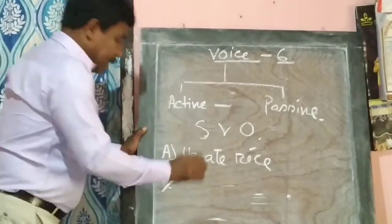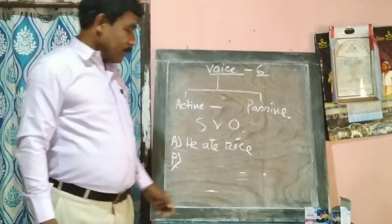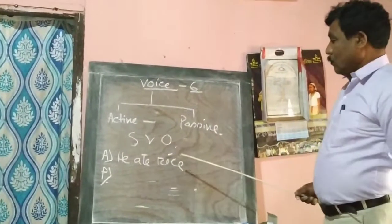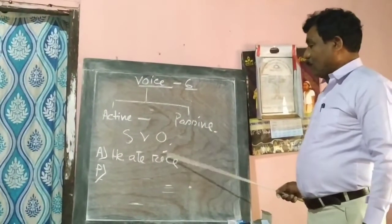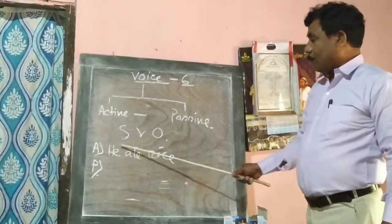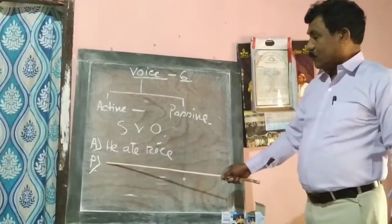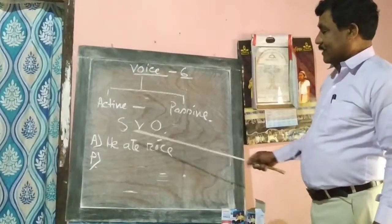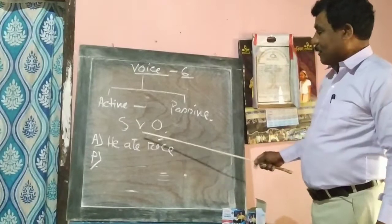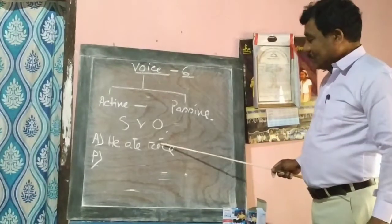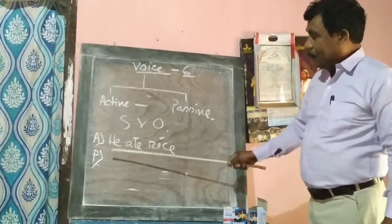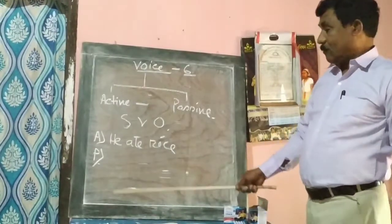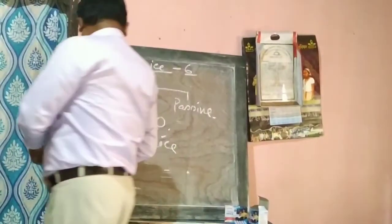What does passive voice mean? In active voice, the object becomes the subject in passive voice. So 'he eats rice' — 'rice' moves to become the subject: 'rice' to passive subject.